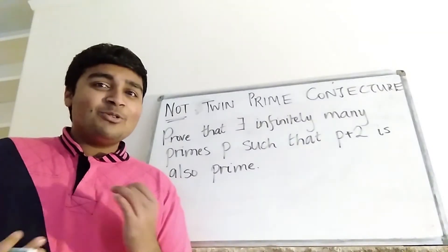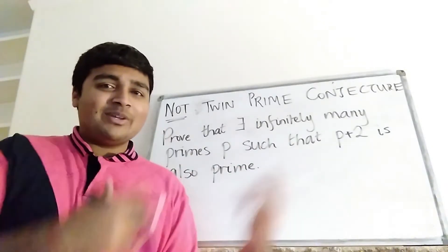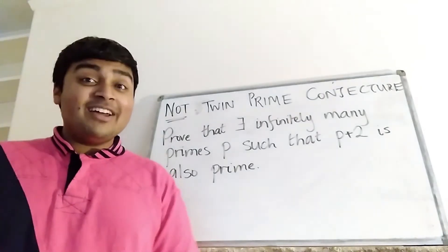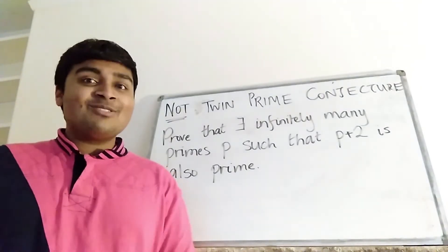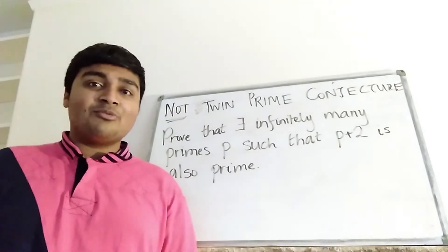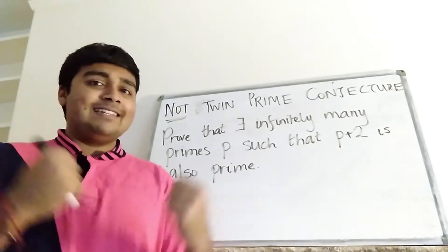Hi, thanks for joining me. Today I'm going to be talking about what I call the not-twin-prime conjecture. So you've probably heard of the twin-prime conjecture before. This is an unsolved problem which says that there are infinitely many twin primes, i.e. prime numbers which are exactly two apart.